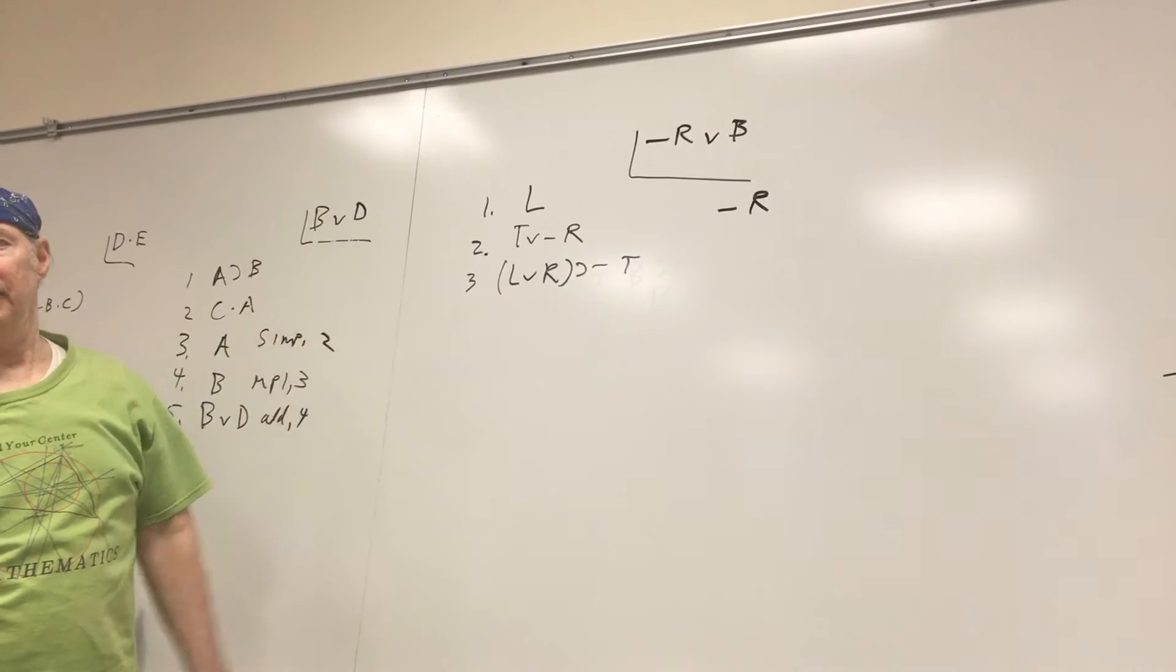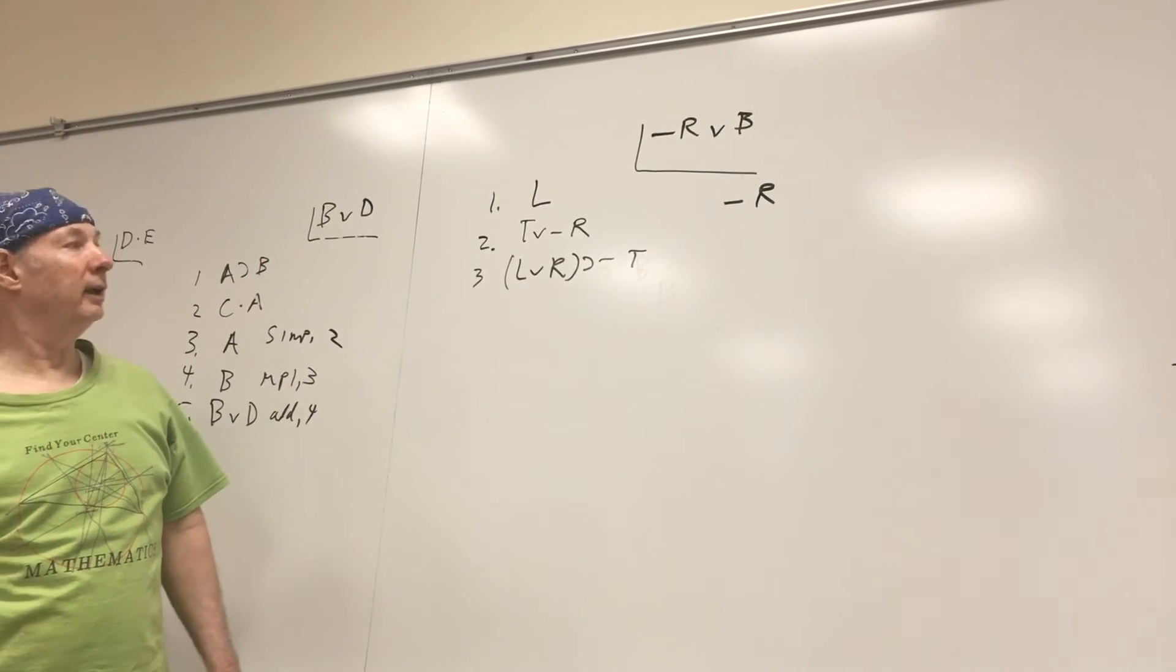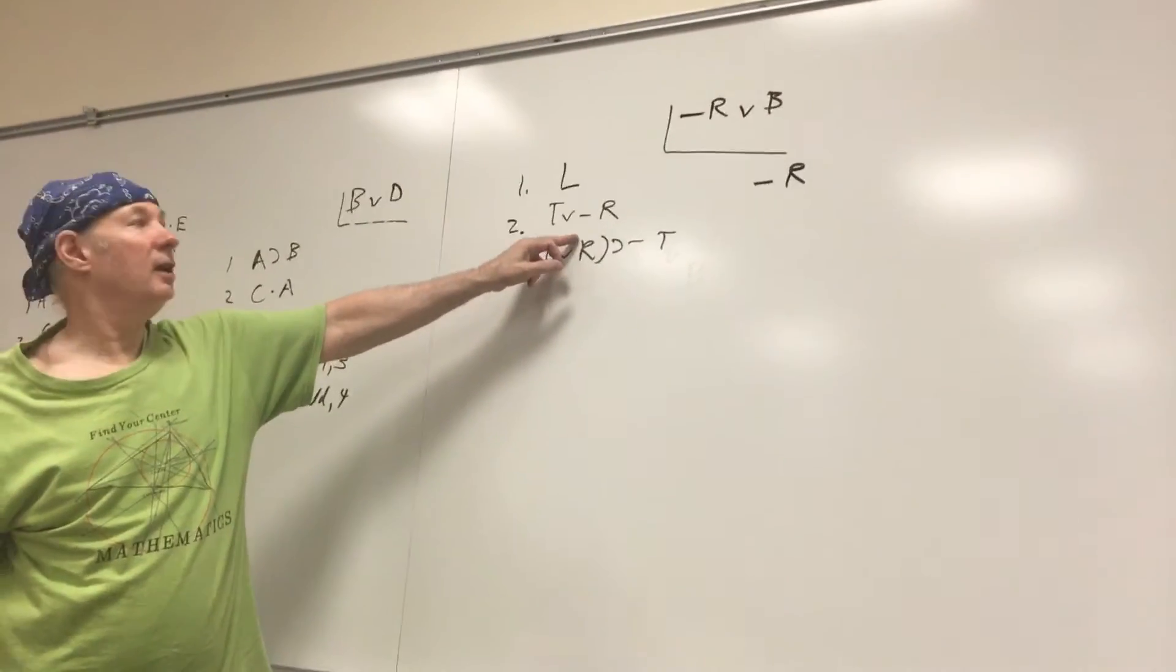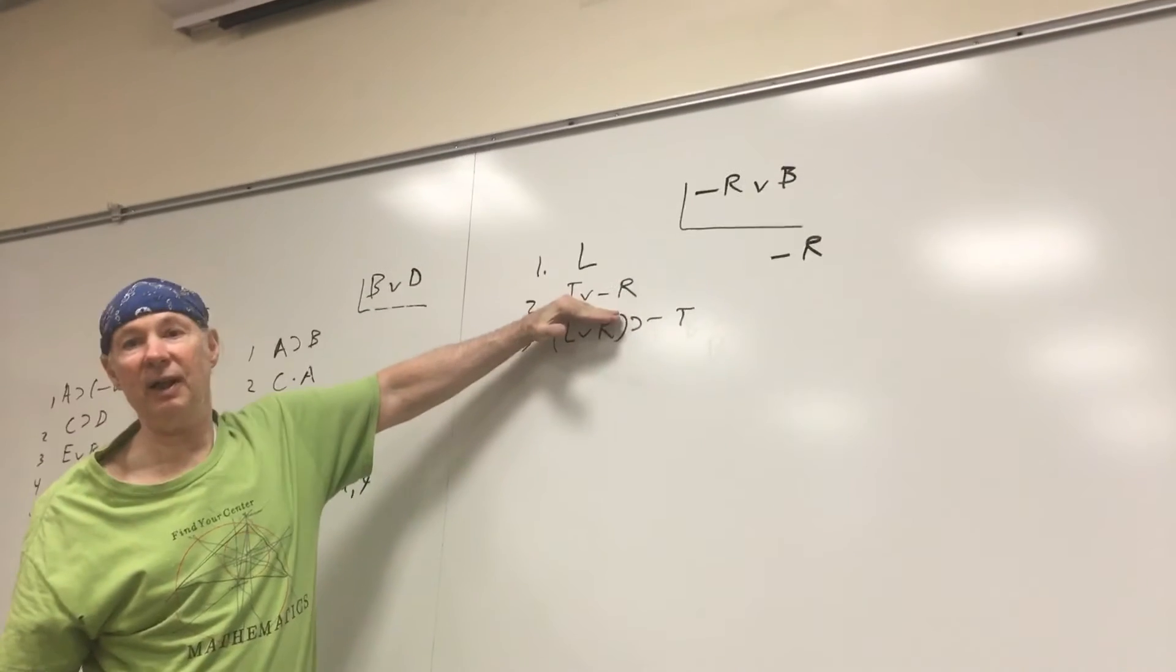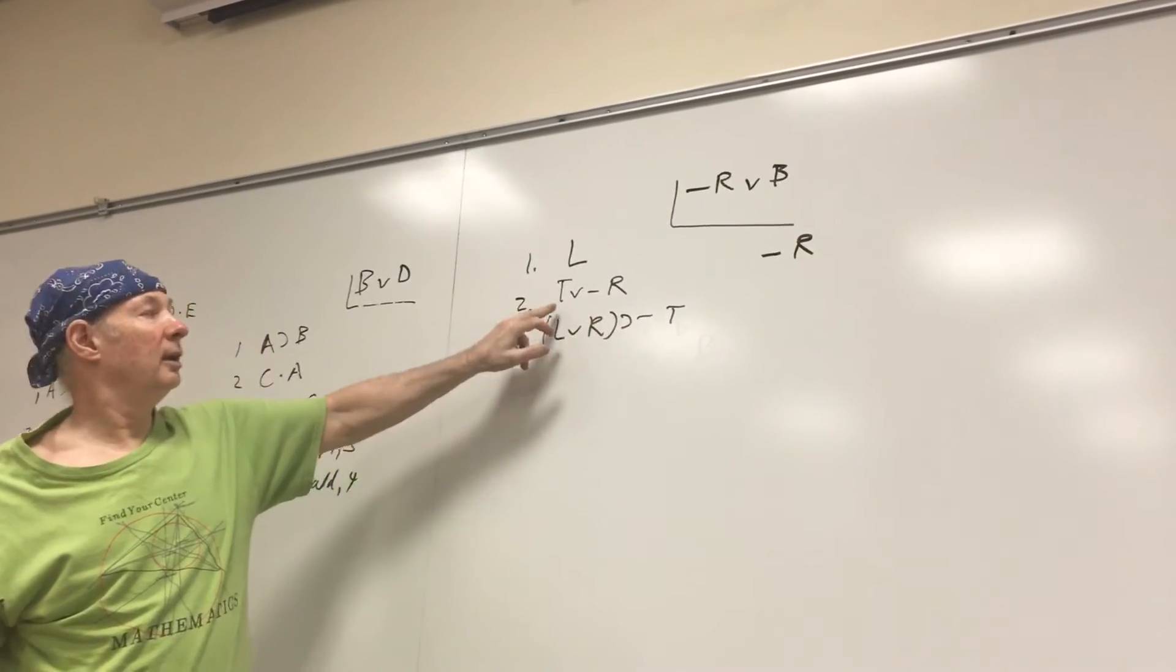Do you see squiggle R in here? What line? In a Y? DS. What else do I need besides line 2 to do DS? Squiggle T.